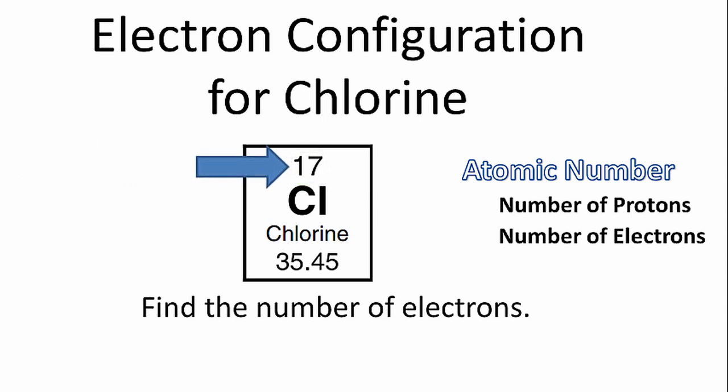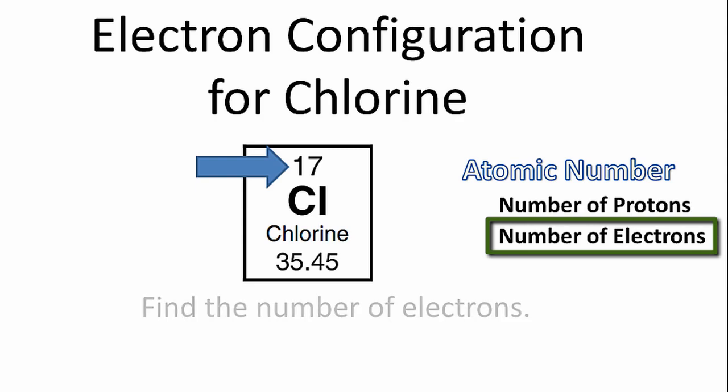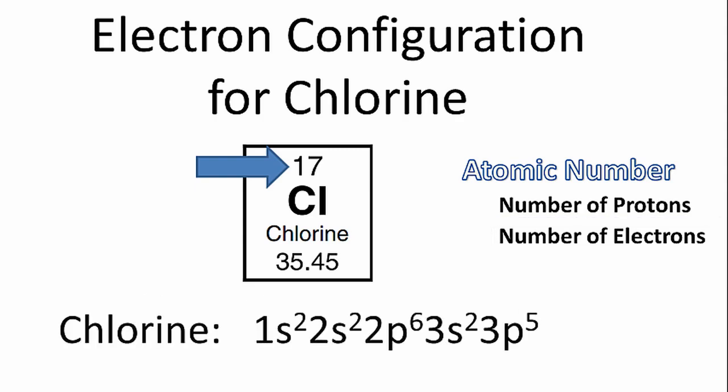That's the number above the element symbol. It tells us the number of protons, but it also tells us the number of electrons. And once we know the number of electrons, we can write the electron configuration for chlorine.